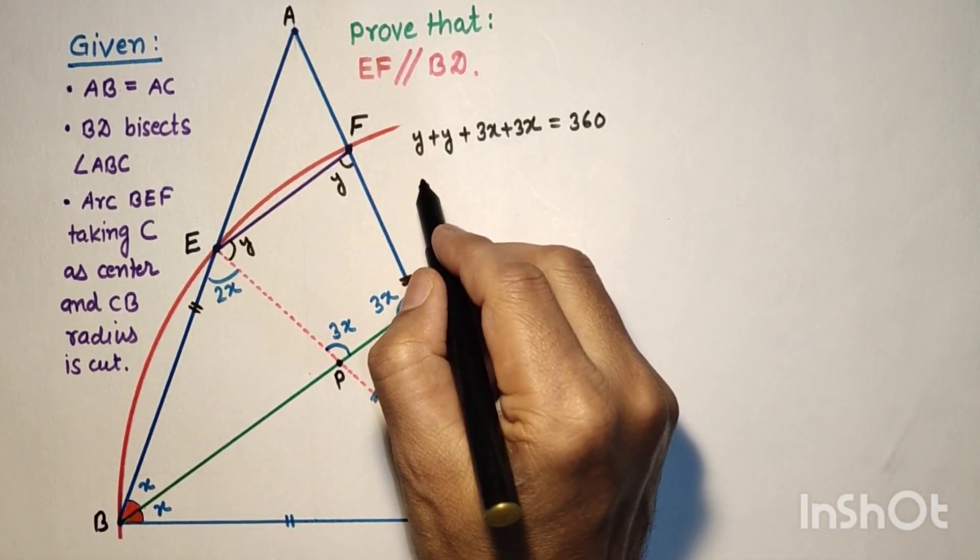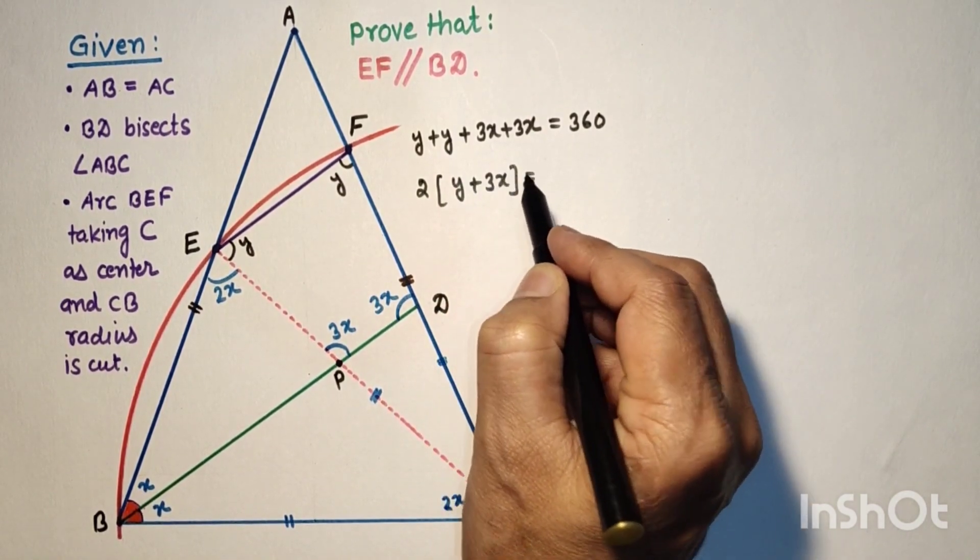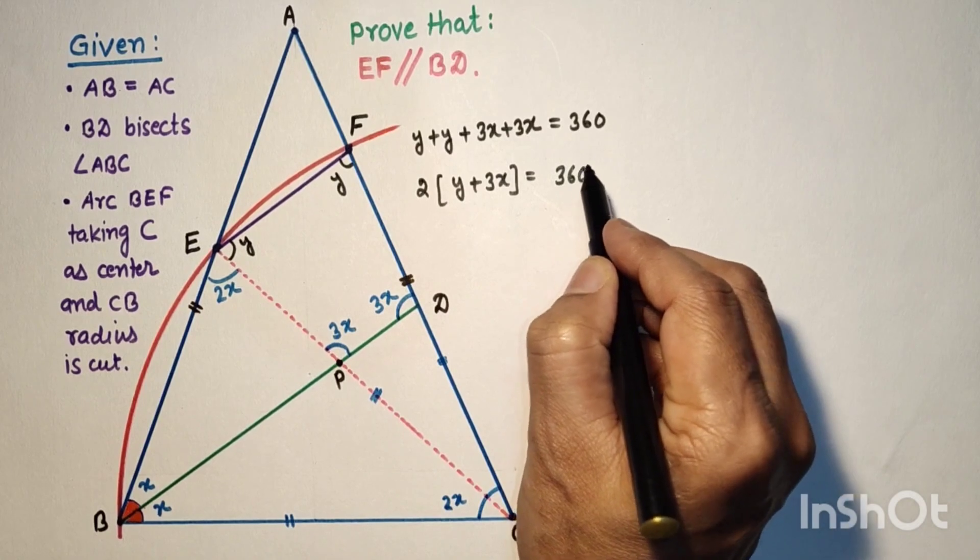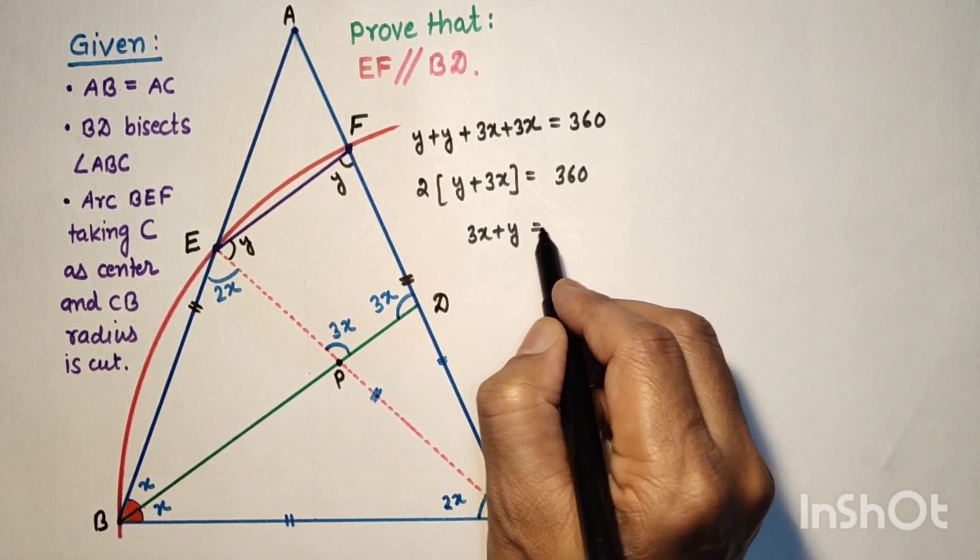Which is 2 times Y plus 3X equals 360, and therefore 3X plus Y equals 180.